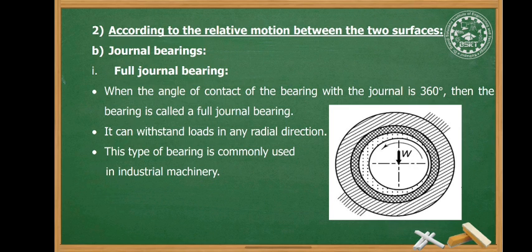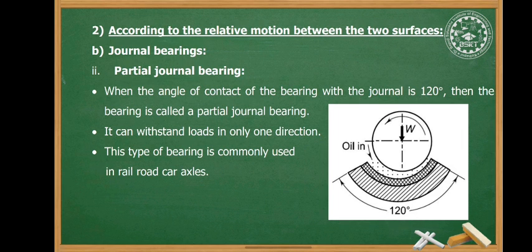Journal bearings are classified into two subcategories. The first is the full journal bearing: when the angle of contact of the bearing with the journal is 360 degrees, the bearing is called a full journal bearing. It can withstand loads in the radial direction and is commonly used in industrial machinery. The second type is the partial journal bearing: when the angle of contact is 120 degrees, it is called a partial journal bearing. It can withstand loads in only one direction and is commonly used in railroad car axles.